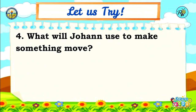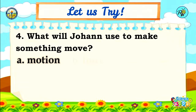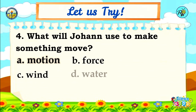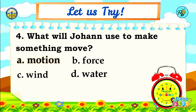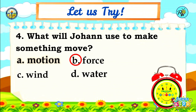Number 4: What will Johan use to make something move? A. Motion, B. Force, C. Wind, D. Water. Time is up! If your answer is letter B — Force, you are correct!